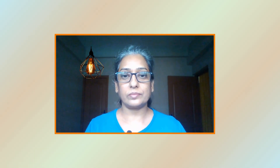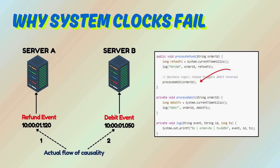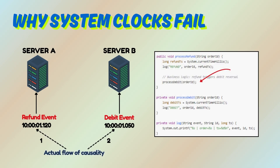Imagine a refund logged on server A and a debit logged on server B. By timestamps, it looks like the debit happened before the refund — but business logic says otherwise. What's gone wrong?